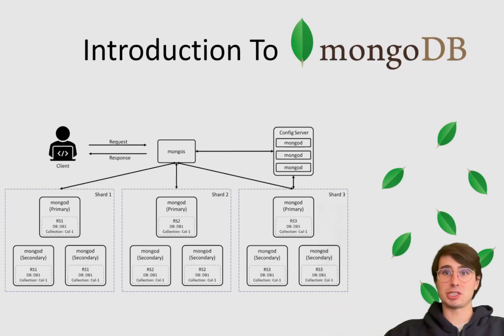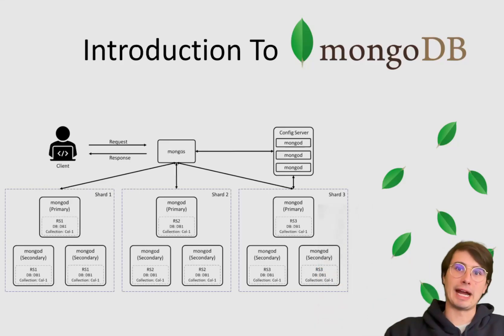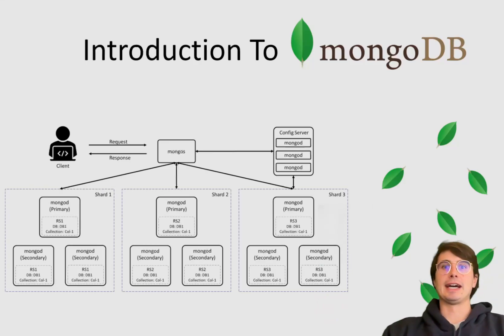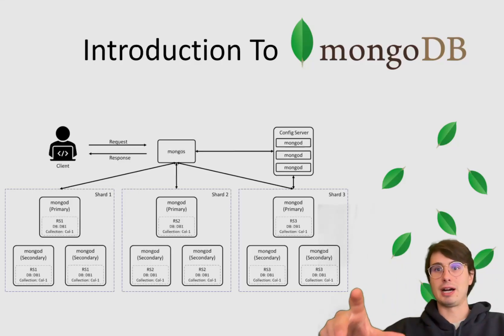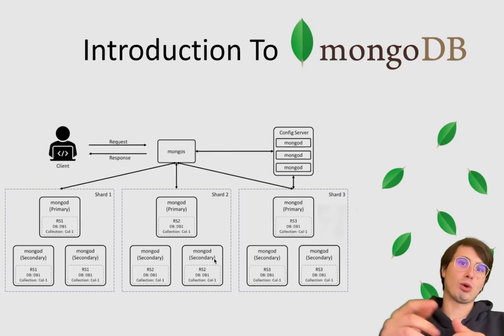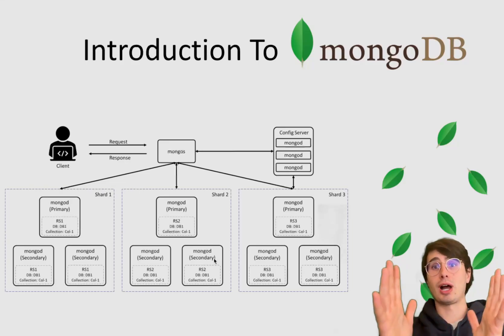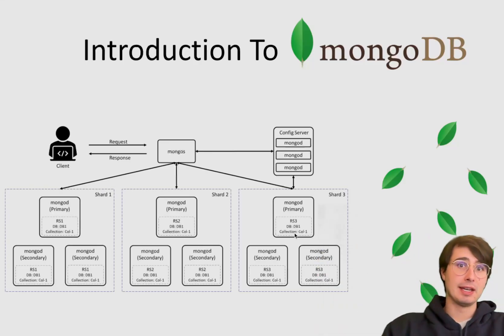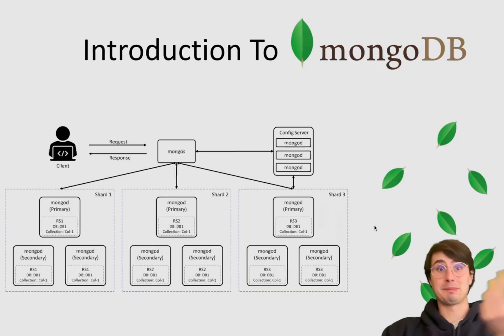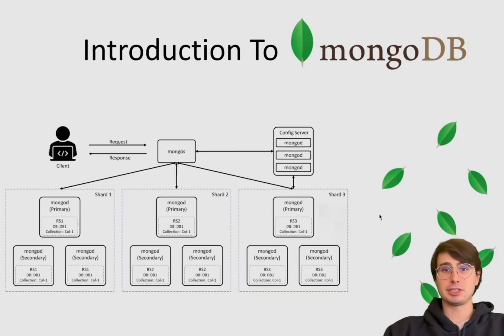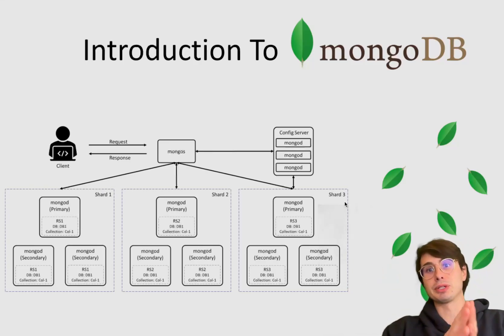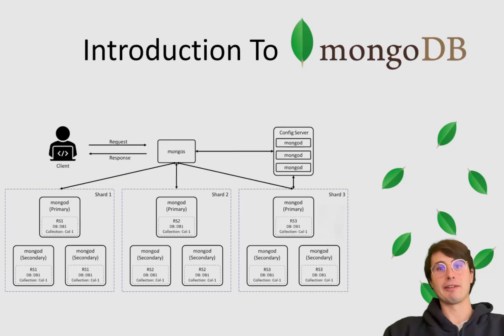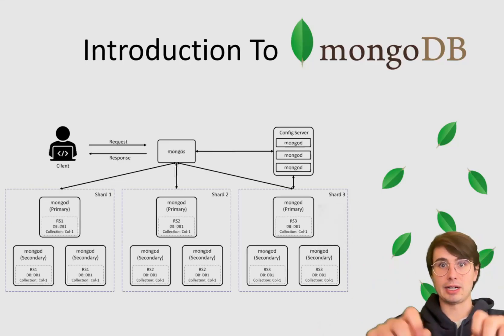Some pros of MongoDB: first, flexibility — its schemaless design means data can evolve without requiring migrations or schema changes. If you change the format of your data, you don't need to retroactively change all existing data. It also has a JSON-like structure, meaning natural compatibility with modern applications. Additionally, horizontal sharding allows the database to scale across multiple servers easily without needing to pre-plan capacity. Finally, it has a really strong ecosystem with a massive community and tons of integrations.